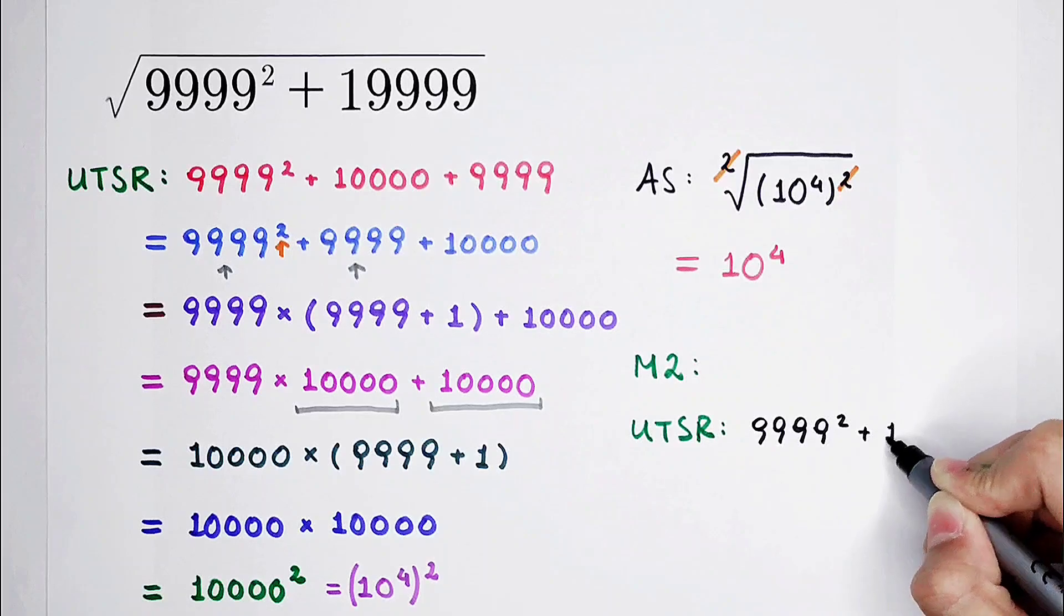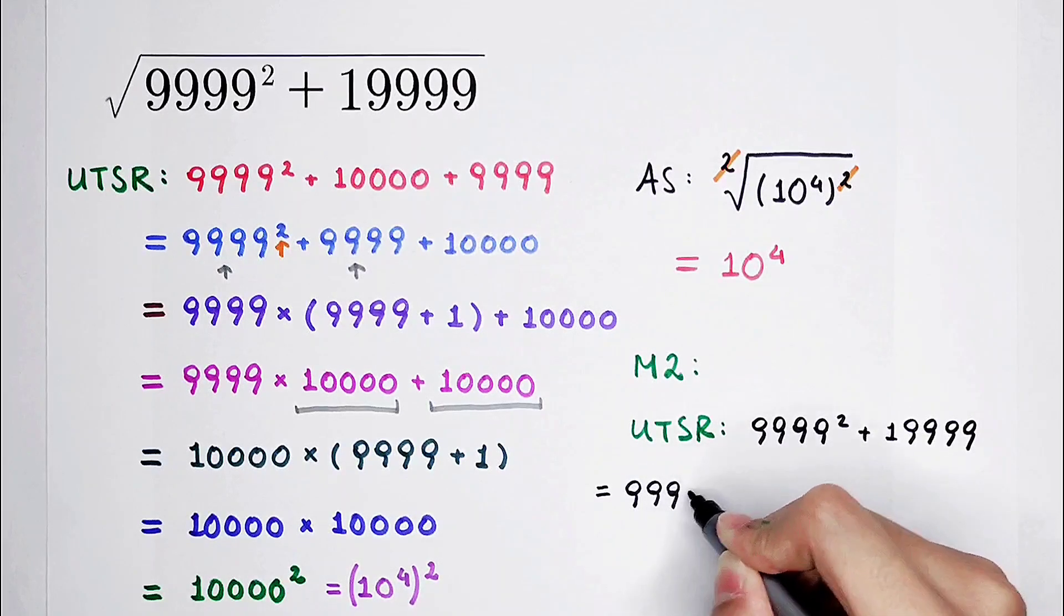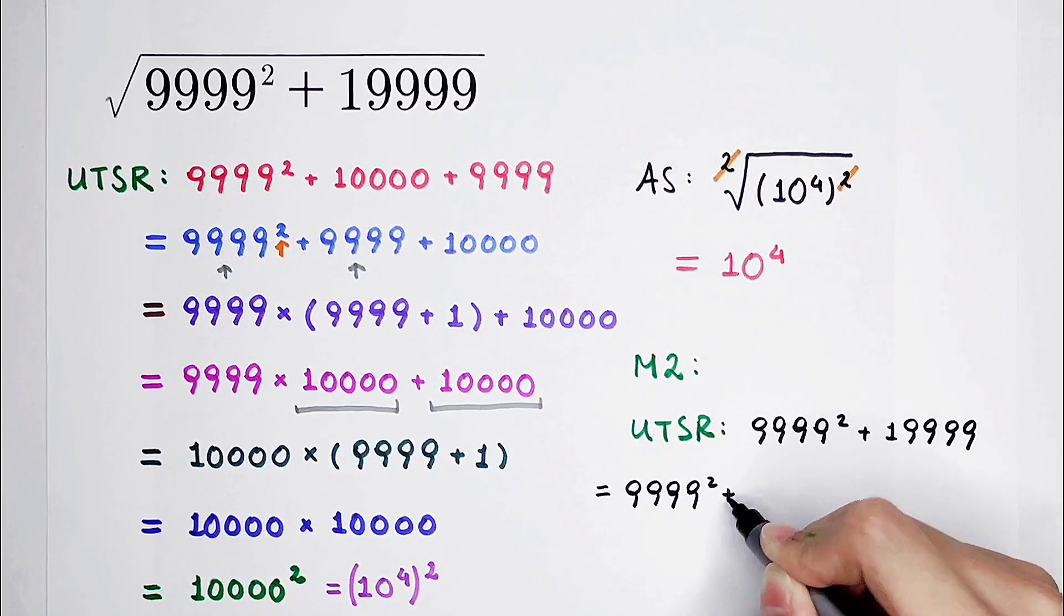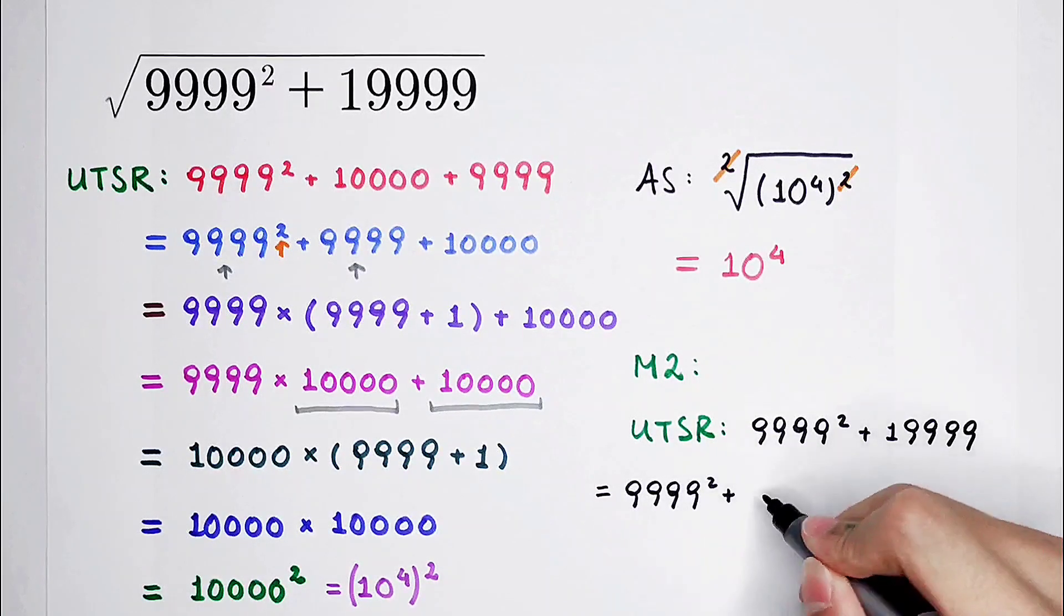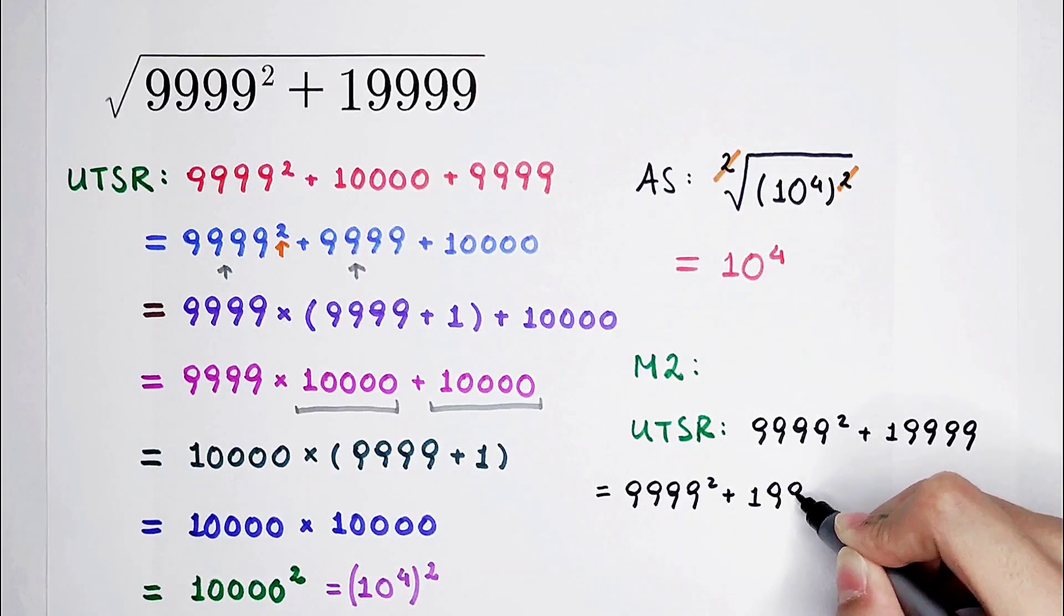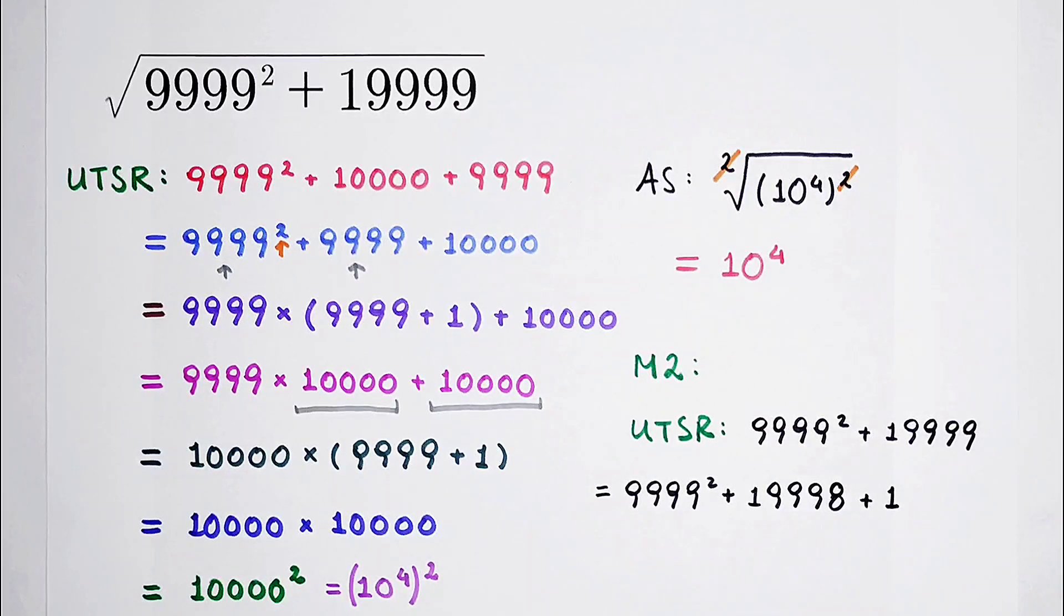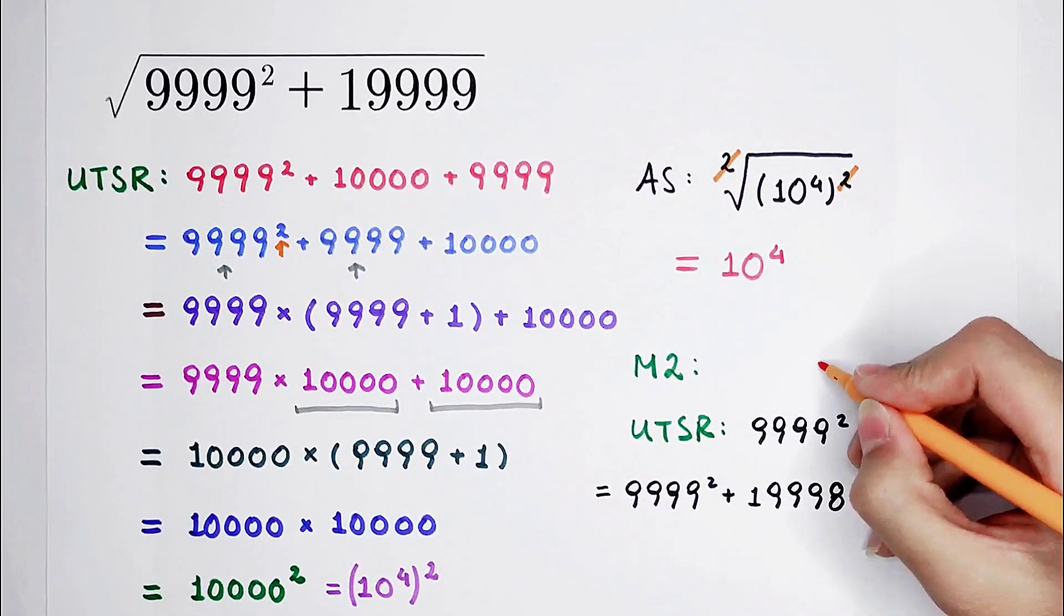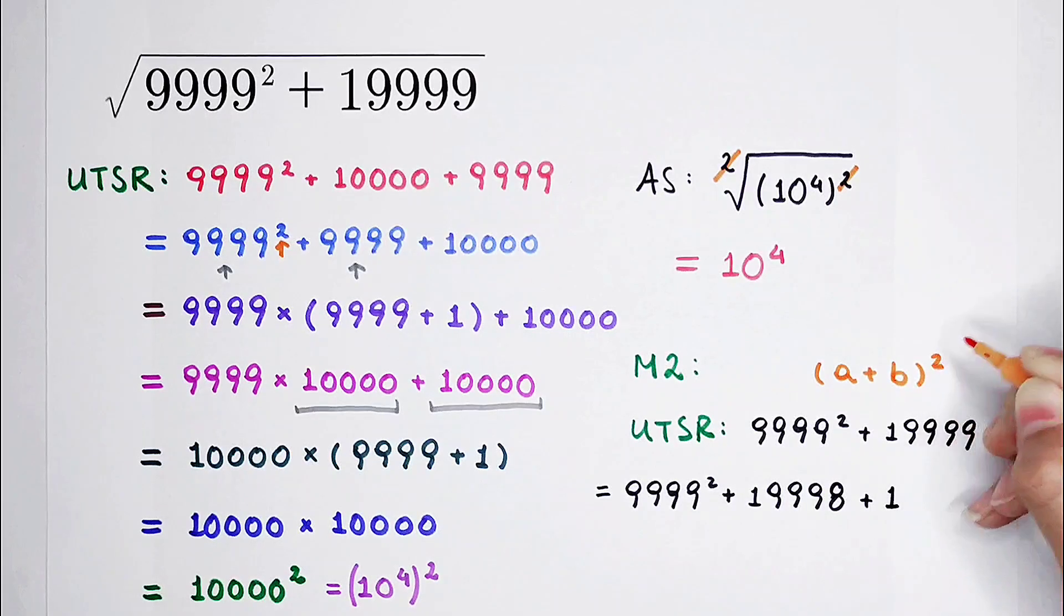This guy. It can be written as this thing. 19999 can be written as 19998 and then plus 1. Why? Since I'm going to write this term as the form A plus B all squared.